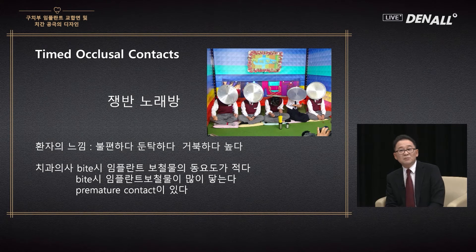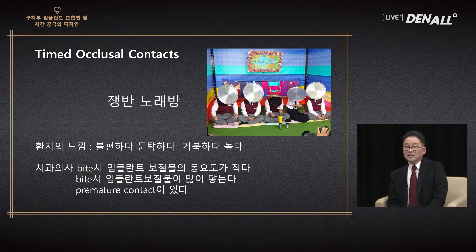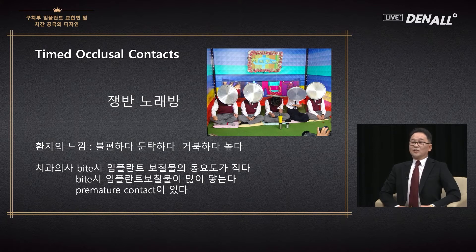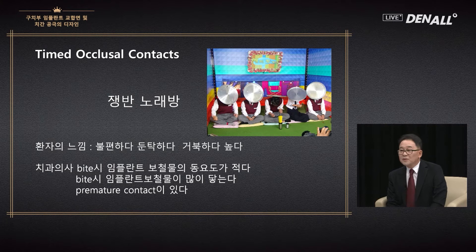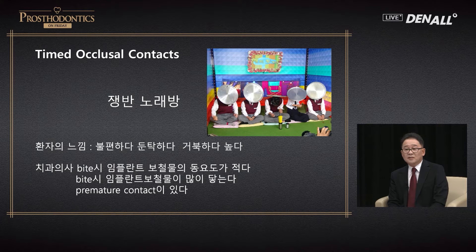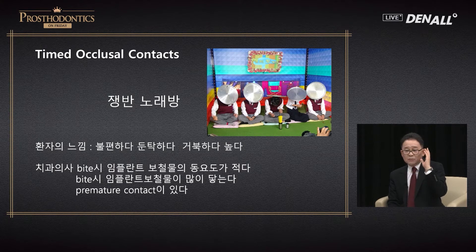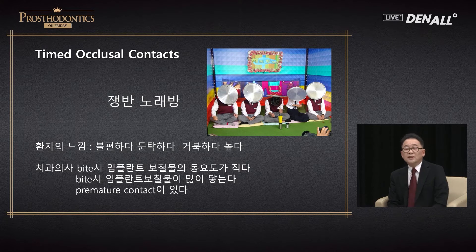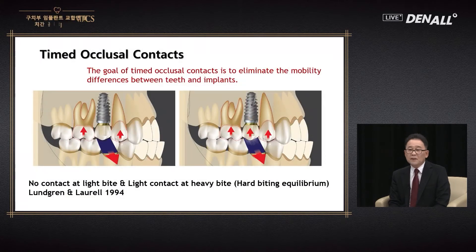It reminds me of the tray karaoke game — all natural teeth are trying to avoid the falling tray by lowering their head, but the implant is just sitting straight and gets hit hard. So when the patient complains of discomfort but there is no problem when you see the occlusal marks, the dentist should think there is little mobility of the implant prosthesis under bite, and premature contact is occurring a lot — that needs to be adjusted.